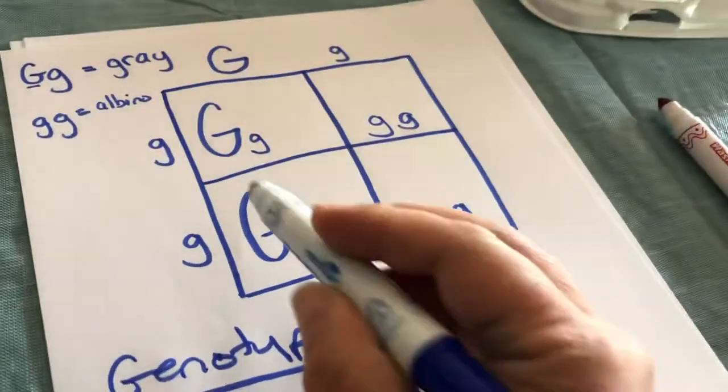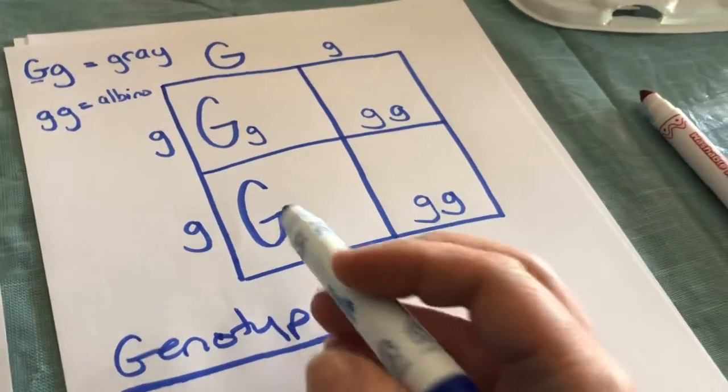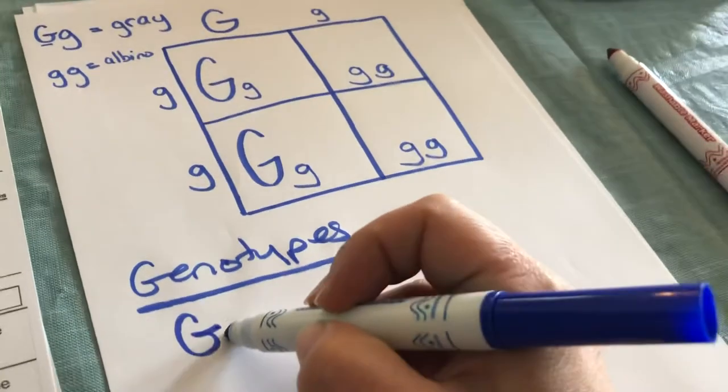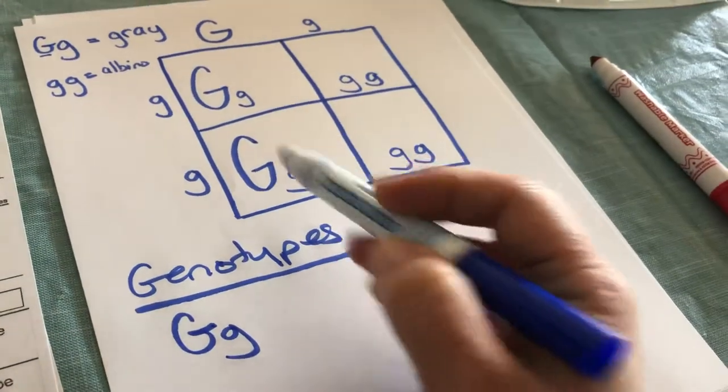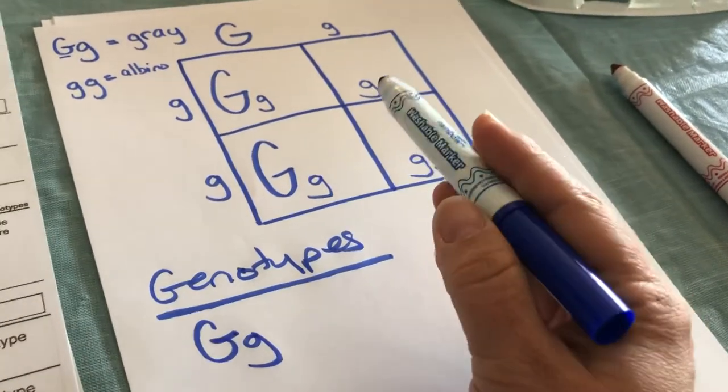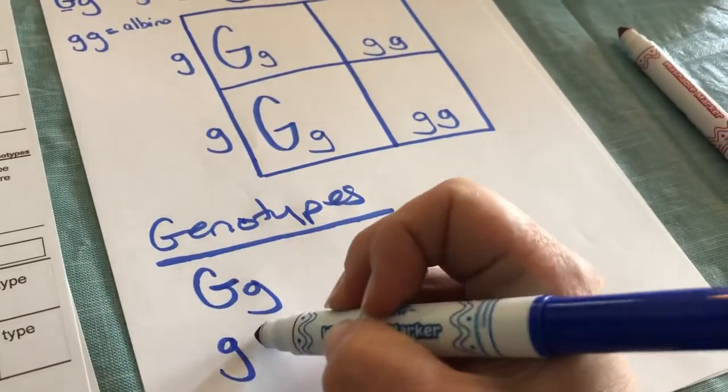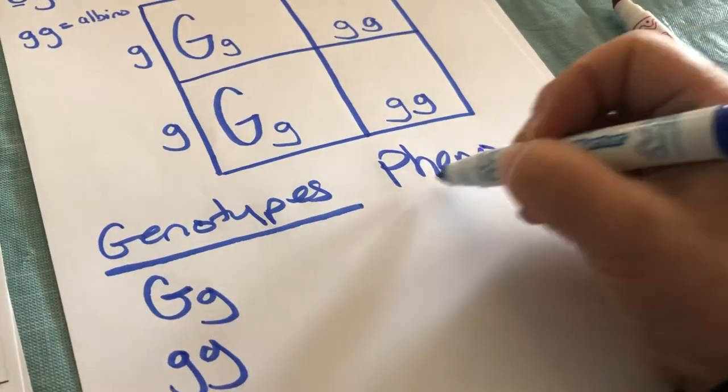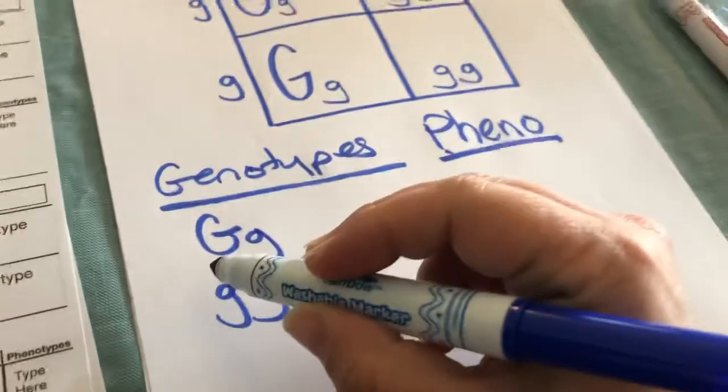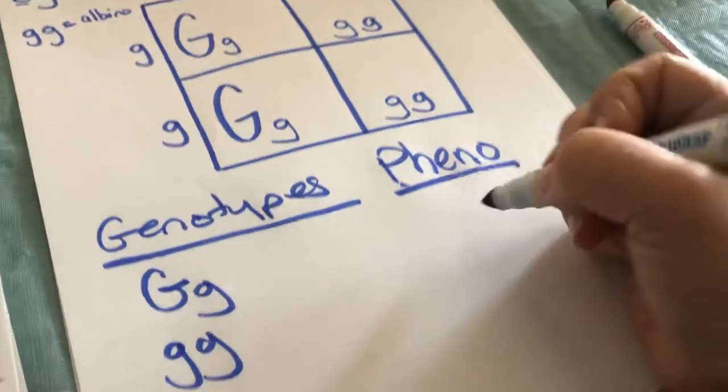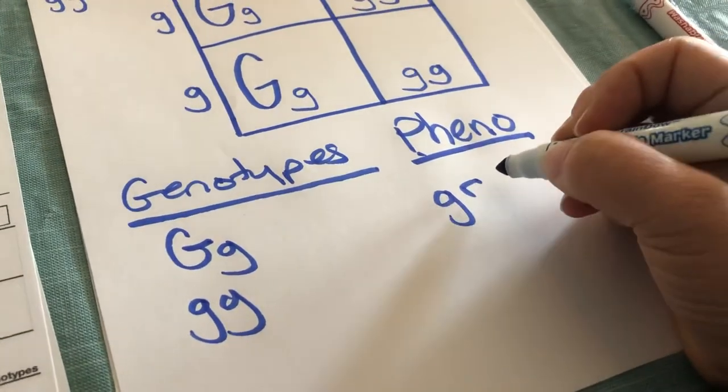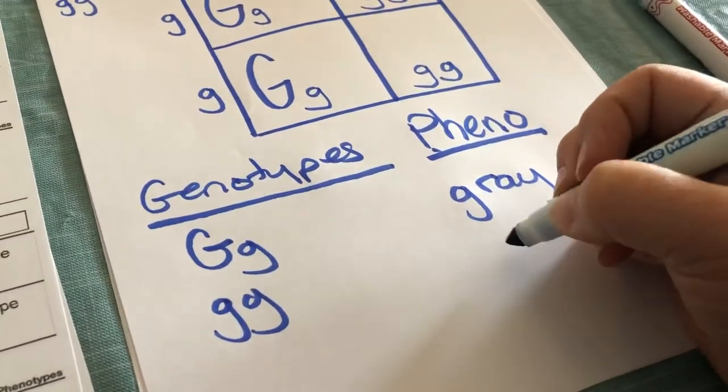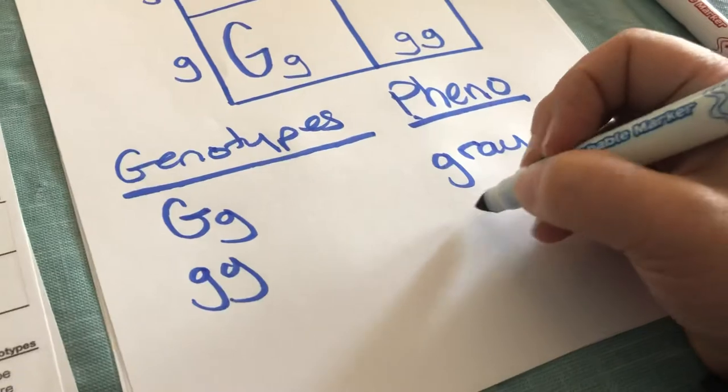The genotypes we have today, there are only two kinds. I know there are four boxes but there are only two types of genotypes. The mice will either be capital lowercase g, which is called hybrid, or they'll have two lowercase g's, which are pure. And phenotypes, capital lowercase, that's going to be gray because it's got that capital letter for gray. And two of those albino mean it's going to be white fur or we're going to call that albino.